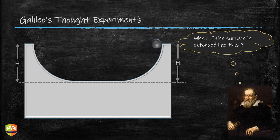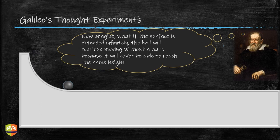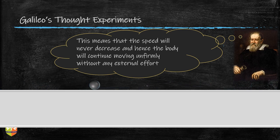Galileo then stretched his imagination further to a setup where only the first half of the extended path is present — and the other half is infinitely long. If the path is infinitely long, the ball rolling along it can never attain the same height, so it will continue moving indefinitely. Every time it approaches an upward curve, that curve is removed, so the ball never stops. This is what Galileo concluded through his thought experiments — that in the absence of friction, an object will continue moving forever.